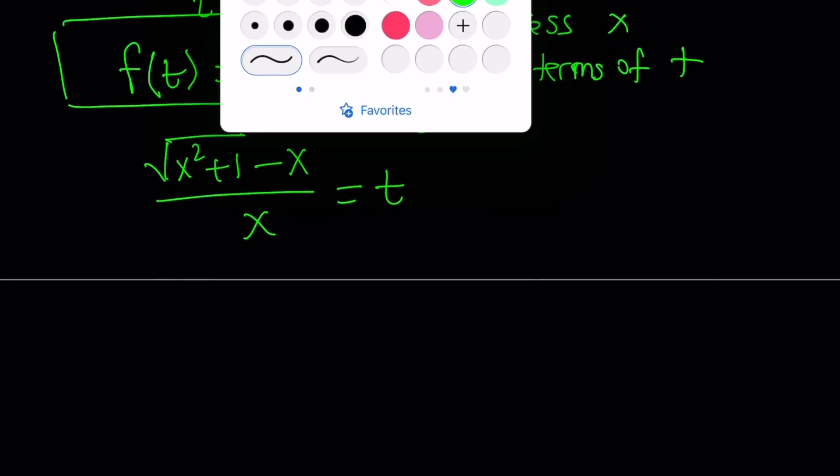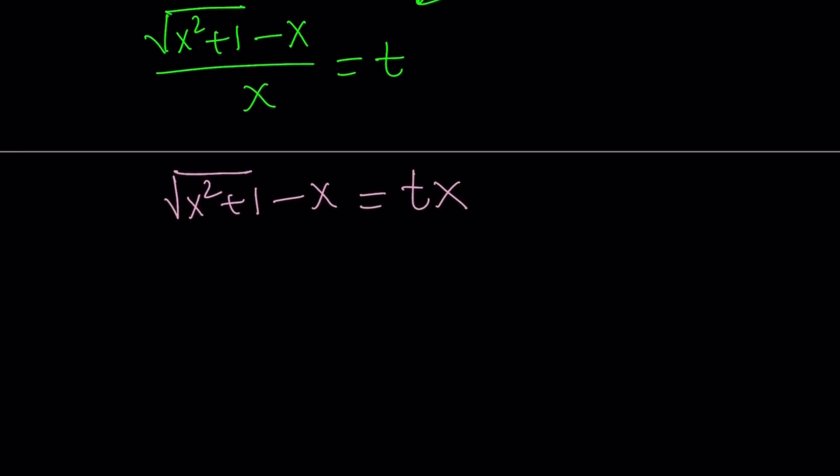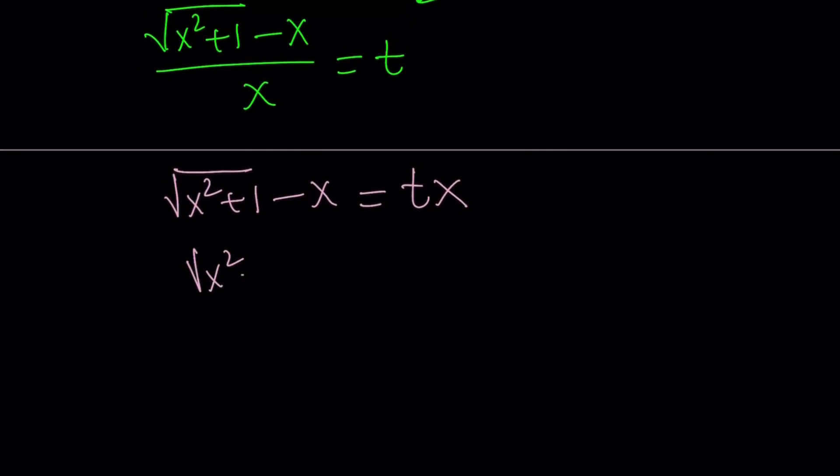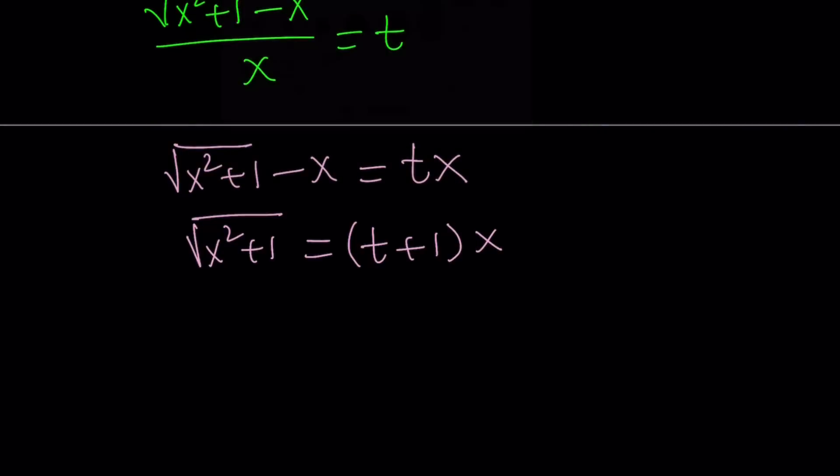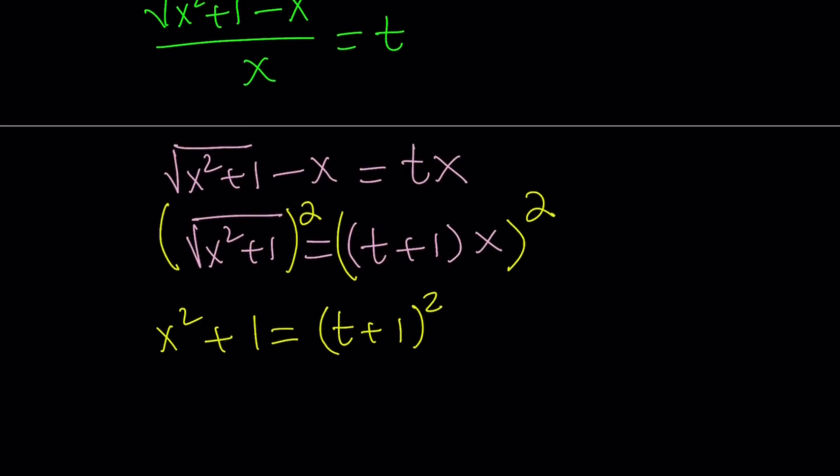Obviously, you don't want x to be 0. But is f defined at 0? At the end, we're going to find out, and let me tell you something, it is not going to be defined. I have a radical, so let's add x to both sides. This becomes tx plus x, which I can write as (t+1) times x. Now is a good time to square both sides and get rid of all the radicals. When we square the left hand side, we get x squared plus 1. When we square the right hand side, we get (t+1) squared multiplied by x squared.